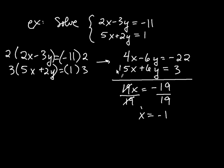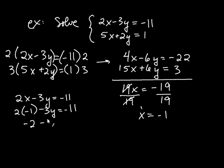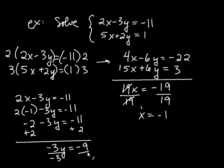So now I have to go back and find my y. And why don't I pick this top equation, 2x minus 3y equals negative 11. So negative 2 minus 3y equals negative 11. And now I'm going to add 2 to both sides. So what do I get now? It's going to be negative 3y is equal to negative 9. And if I now divide both sides by negative 3, I get y is equal to, it's going to be positive 3.